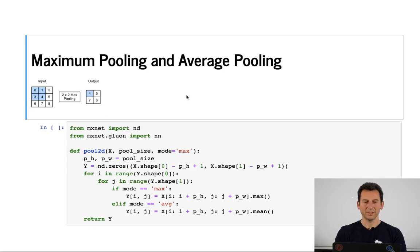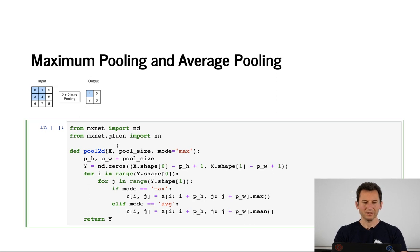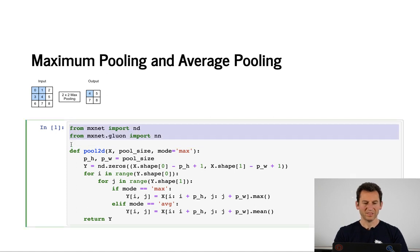Let's have a look at how pooling works in practice. The first thing we need to do is define our pooling function — it's very easy. We need to import MXNet. The important argument is the pool size, so I'm going to get the height and the width by querying the pool size.